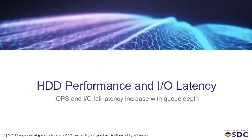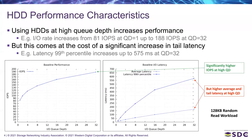So first, hard disk performance and IO latency. The typical hard disk performance characteristic curves are shown here for a 128 kilobyte random read workload. As the drive is accessed at a higher QDepth, we can see that performance moves from 81 IO per second at QDepth 1 up to 188 IO per second at QDepth 32 for this workload — more than double the performance by increasing the QDepth.